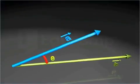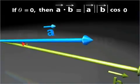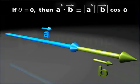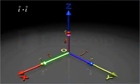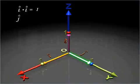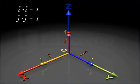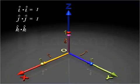The dot product of two vectors is maximum when theta is equal to 0, as cos theta has its maximum value of 1 when theta equals 0. This helps us conclude that the dot product of unit vector I cap with itself is equal to 1. Similarly, J cap dot J cap is equal to 1, and K cap dot K cap is also equal to 1.